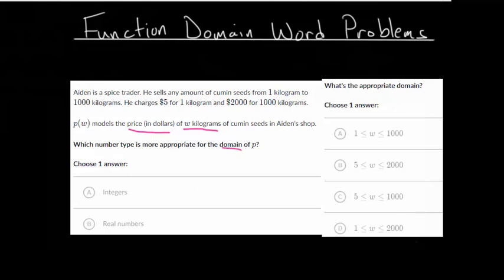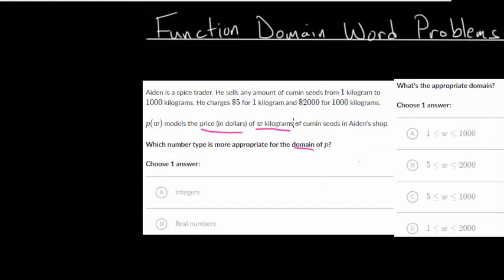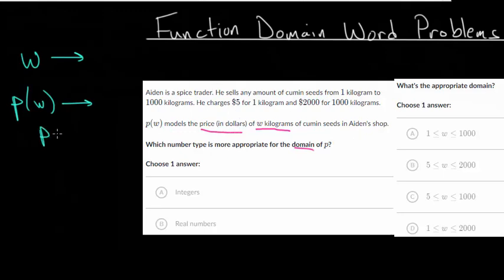With most word problems, if we're using letters, my advice is to first write down what those letters mean. So we have w and we have P(w), and they tell us exactly what those are. P(w) models the price, and that's going to be in dollars. So that's price, and I do like to write the units.